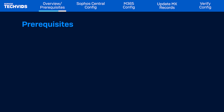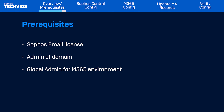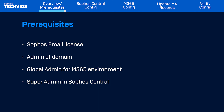Before you start, you must have a Sophos Email license, you must be the administrator of the domain, you must also be the global admin of the M365 environment, and finally you must be a super admin in Sophos Central.